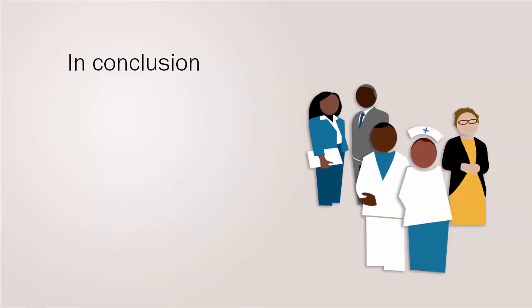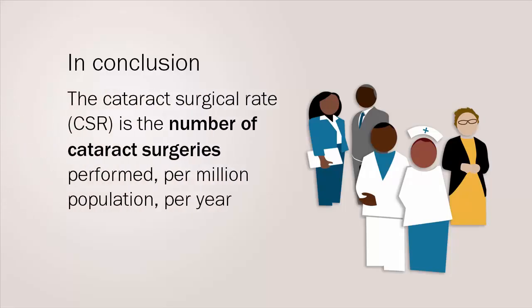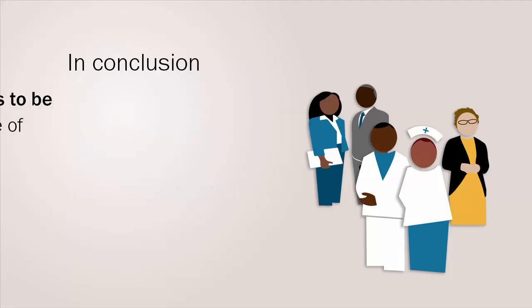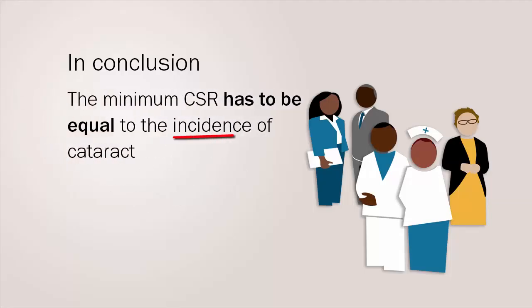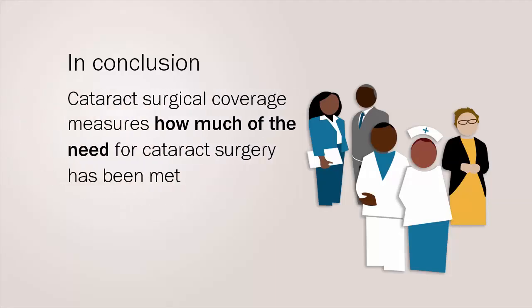In conclusion, cataract surgery is an effective secondary and tertiary public health strategy to prevent blindness. The cataract surgical rate (CSR) is the number of cataract surgeries performed per million population per year, and the minimum CSR has to be equal to the incidence of cataract. For Africa the minimum CSR target is 2,000. Finally, cataract surgical coverage measures how much of the need for cataract surgery has been met in a population.